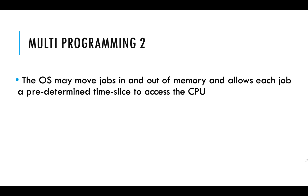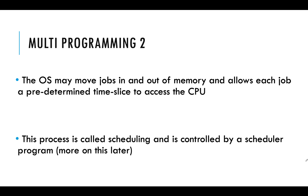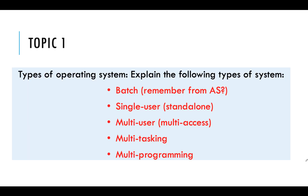The operating system may move jobs in and out of memory, allowing each job a predetermined time slice to access the CPU, done in order and controlled by the scheduler — but we'll cover that in another video. In this video we've covered batch processing, single and multi-user operating systems, and multitasking and multiprogramming. In the next video we're going to cover interrupts, the use of buffering and priority queues.